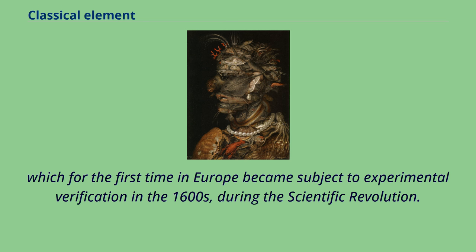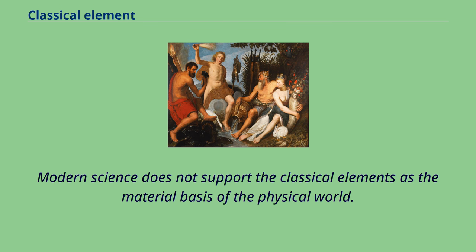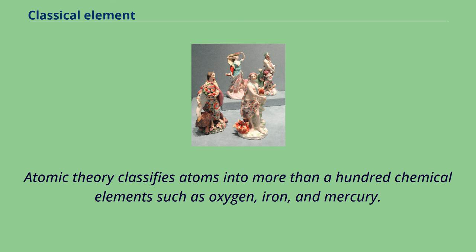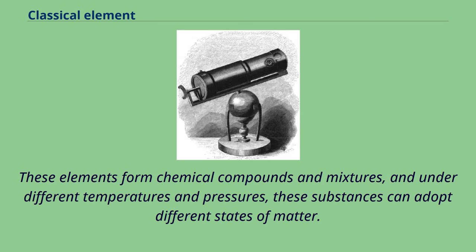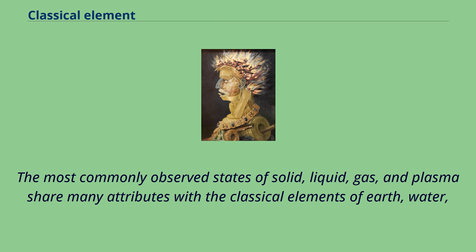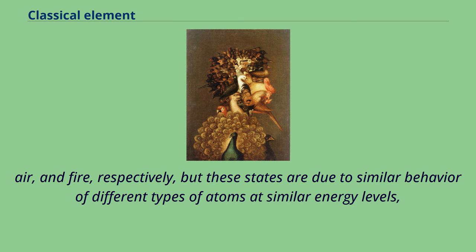Modern science does not support the classical elements as the material basis of the physical world. Atomic theory classifies atoms into more than a hundred chemical elements such as oxygen, iron, and mercury. These elements form chemical compounds and mixtures, and under different temperatures and pressures, these substances can adopt different states of matter. The most commonly observed states of solid, liquid, gas, and plasma share many attributes with the classical elements of earth, water, air, and fire, respectively.